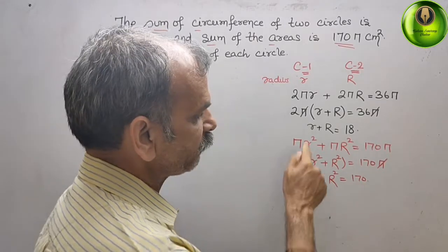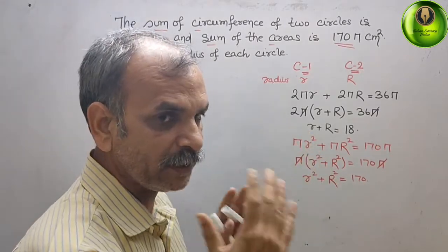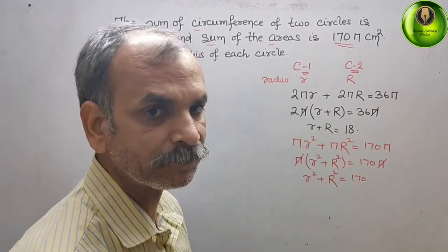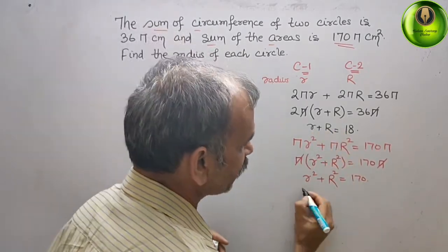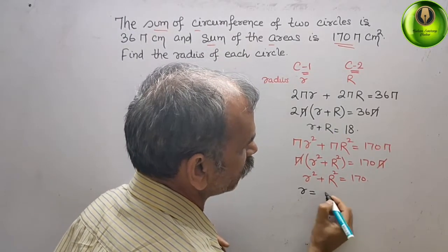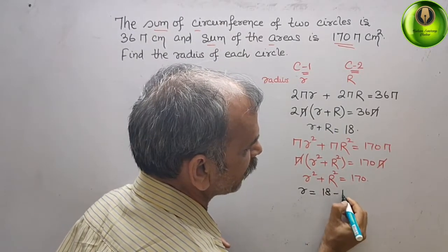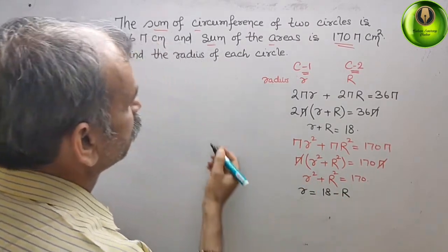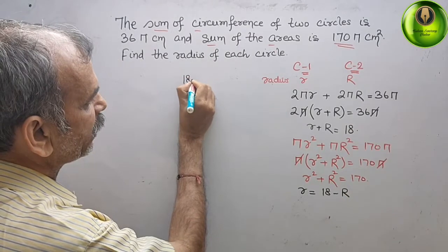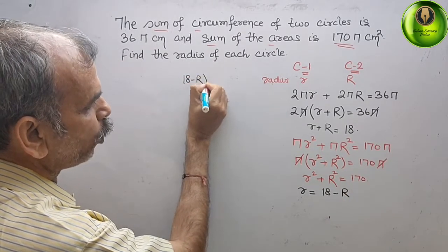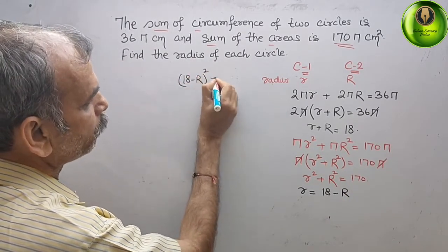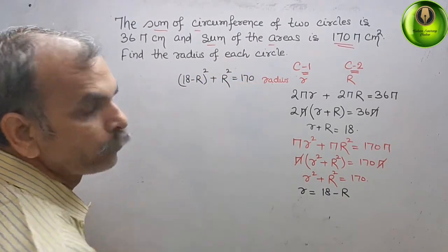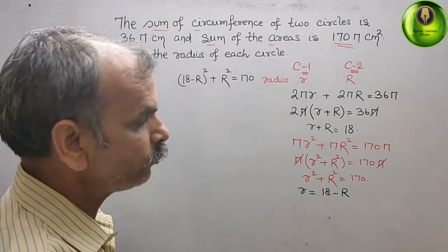From the first equation, if we take r, small r equals 18 minus capital R. Now substitute this value into the second equation. We get: (18 minus capital R) whole square plus capital R squared, which gives 175.